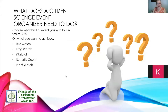As a citizen science event organizer, you first need to decide what kind of event you want to run or what you want to achieve. You might want to do a bird watch, a frog watch, the City Nature Challenge using iNaturalist, work on a butterfly count, or a plant watch.